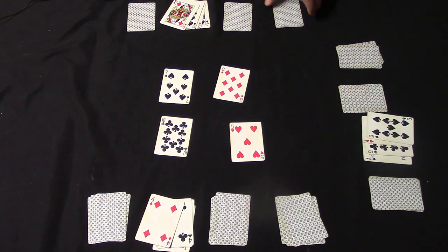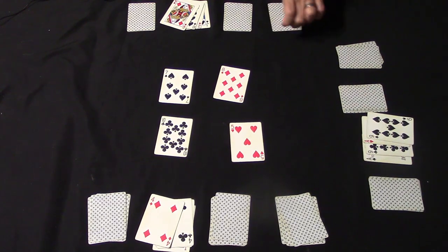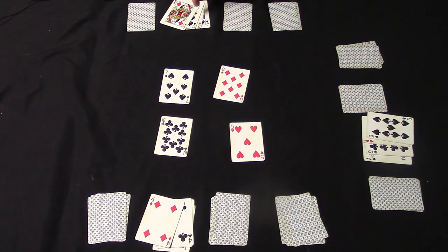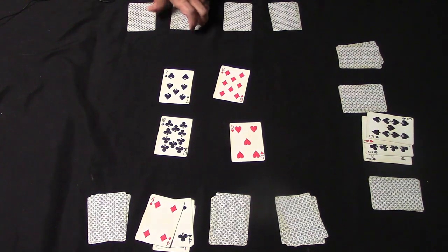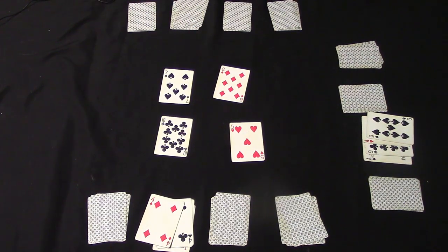So anyway, once you end up getting four of a kind, you'll go ahead and just put the deck down like this. And you're just going to continue to go until somebody ends up getting four of a kind in each of these four piles over here. And once they do, they'll just simply turn over their piles and say James Bond.